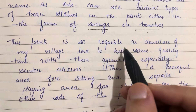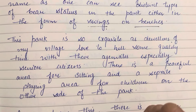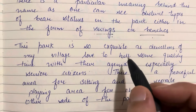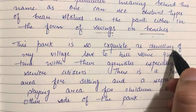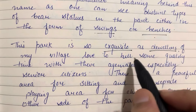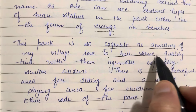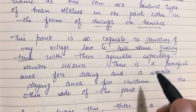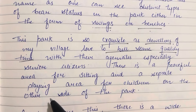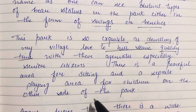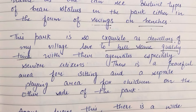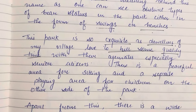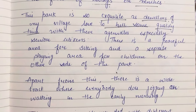This park is so exquisite — meaning wonderful — as the dwellers of my village love to kill some quality time with their age mates, especially the senior citizens. 'Kill some quality time' means to spend good time. There is a peaceful area for sitting and a separate playing area for children on the other side of the park.